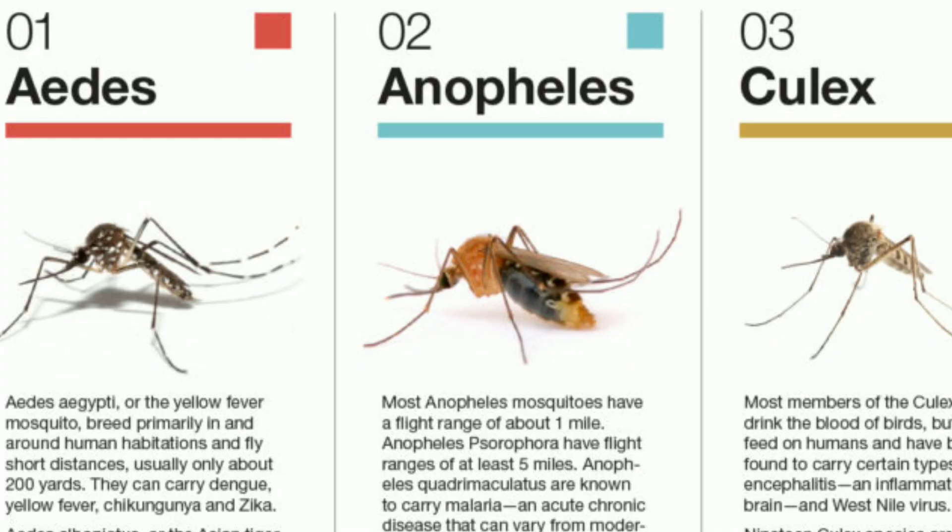How many types of mosquitoes are there, and are all of them dangerous? There are more than 404 species of mosquitoes in India. However, the common ones are Anopheles, Culex, and Aedes. Not all mosquitoes are dangerous.